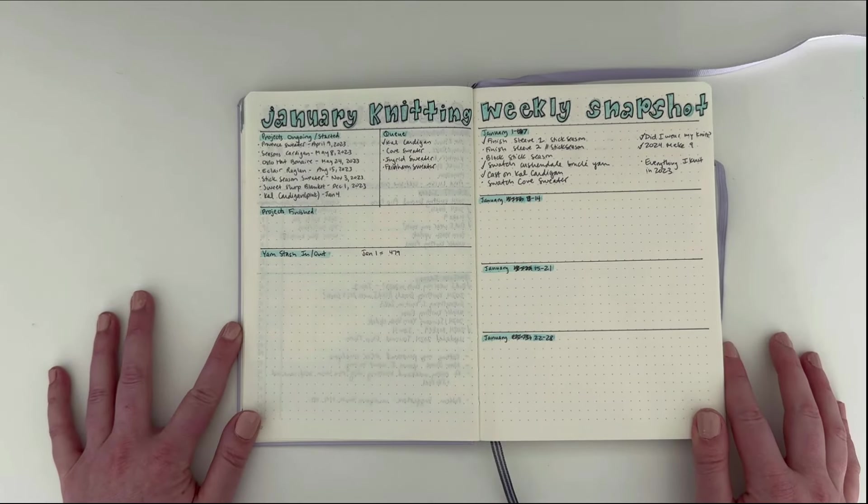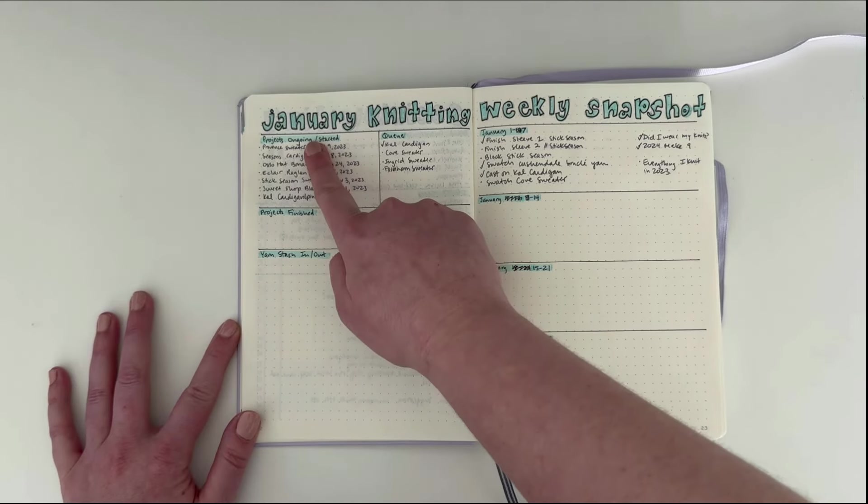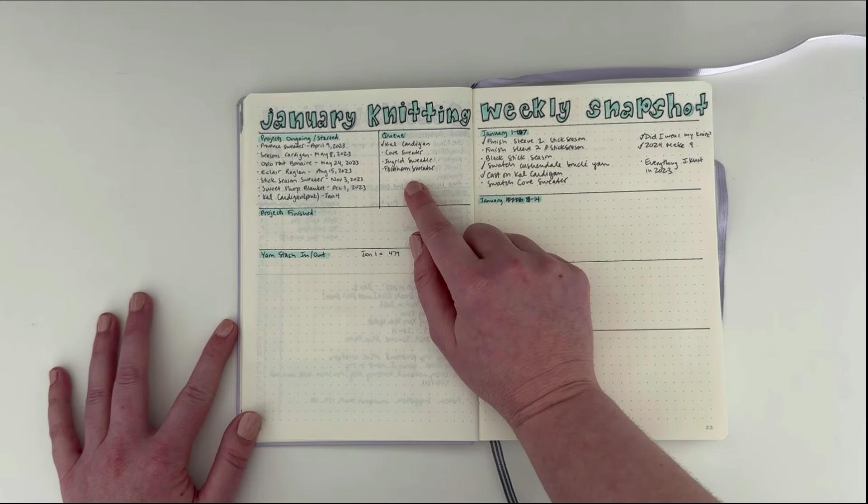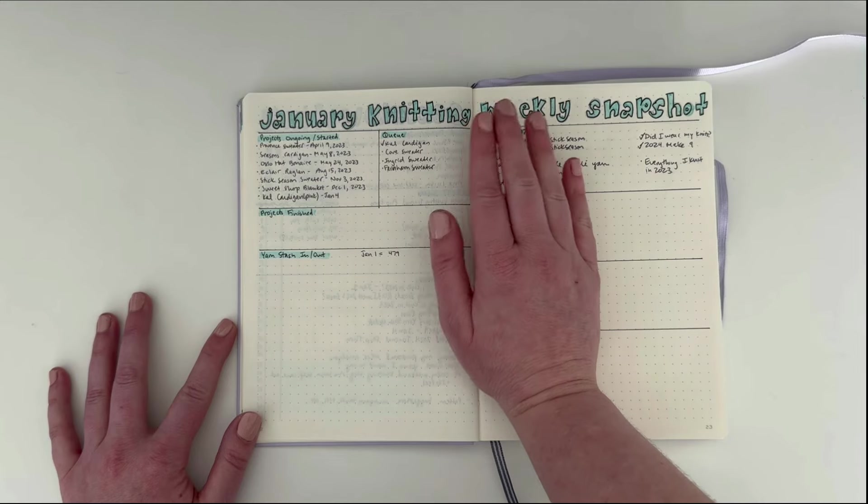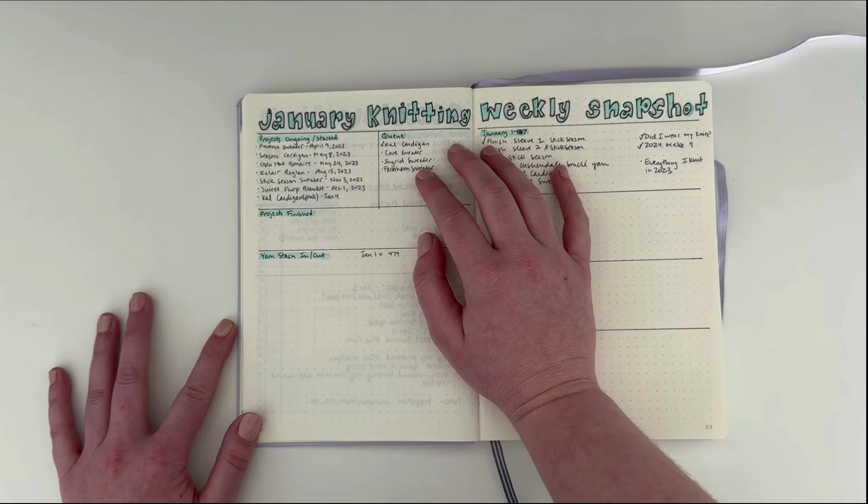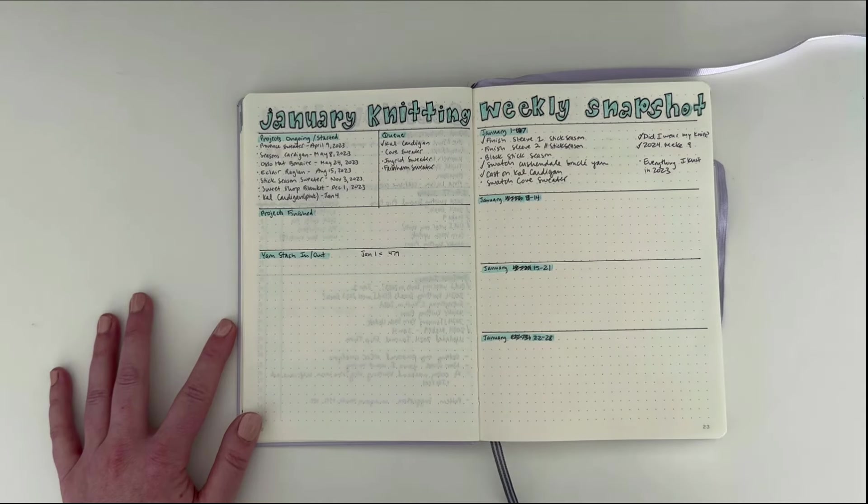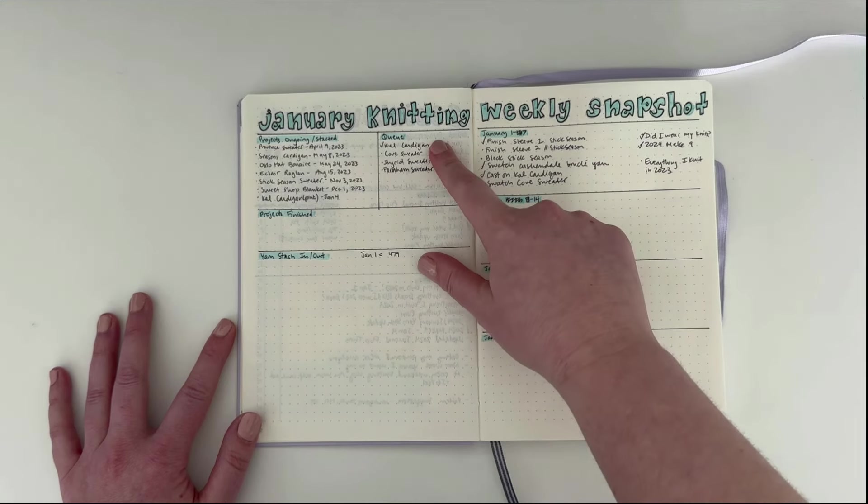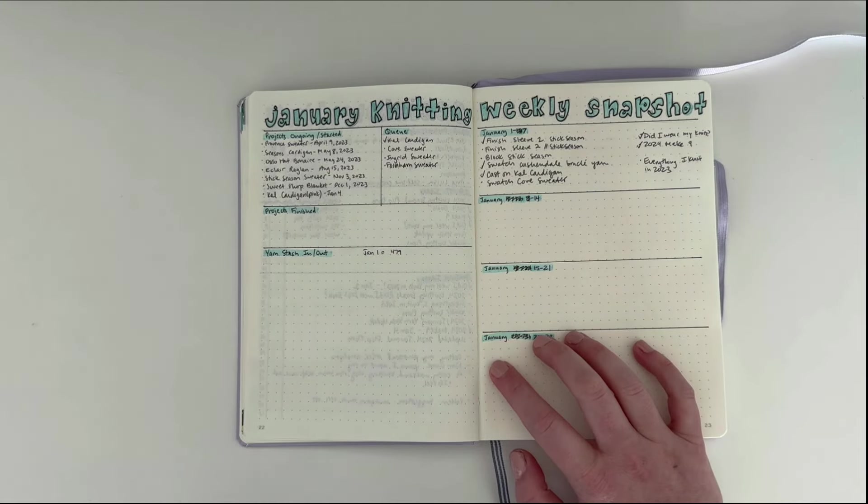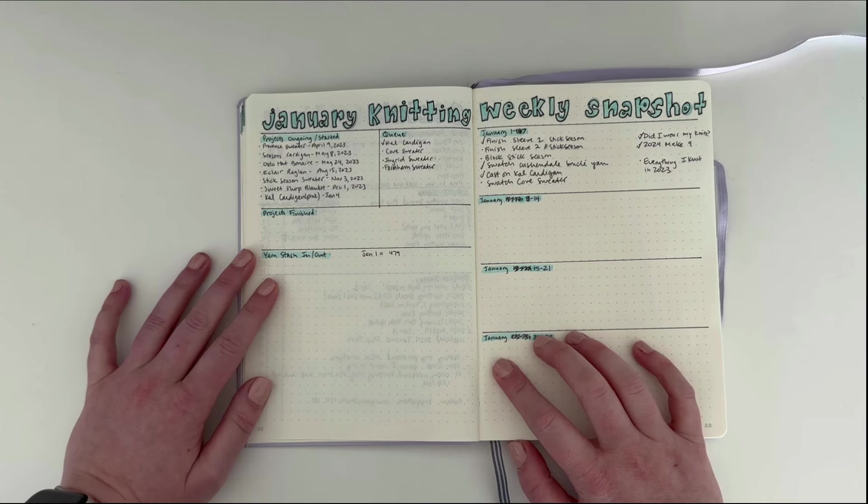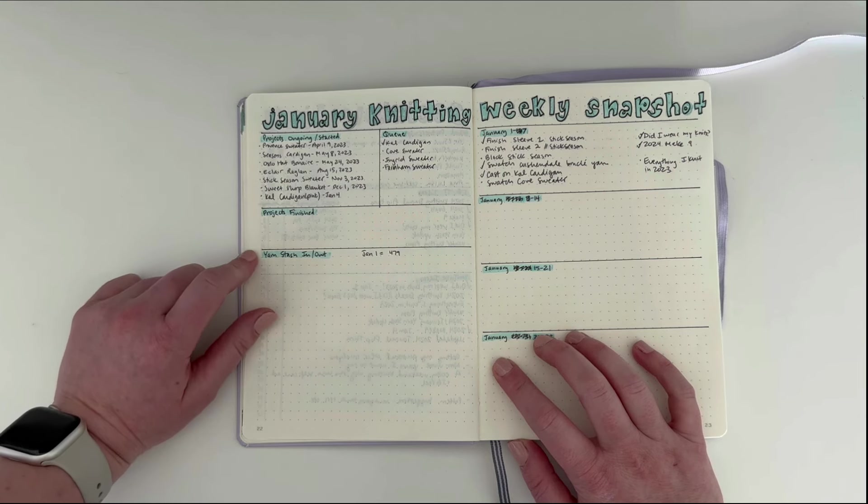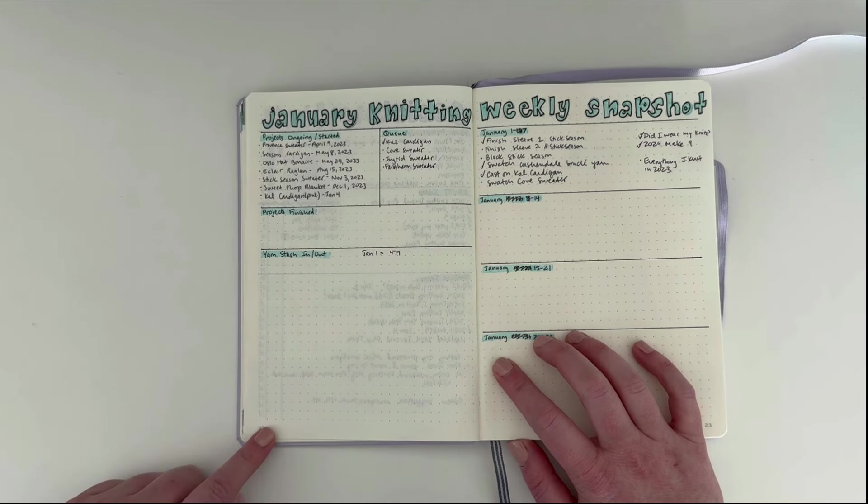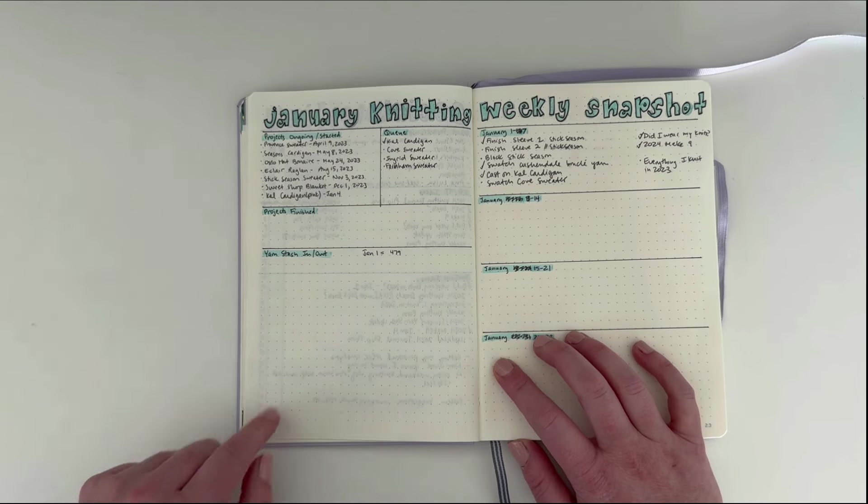Lastly, for my monthly spreads, I've got my January month at a glance where I have my projects ongoing and started. This queue, it sometimes fluctuates between a queue, things that I want to cast on, and patterns or yarns that I really can't get out of my head and I need to just write it down. Right now, it's a bunch of patterns from my make nine that I would really love to cast on, plus a cardigan that's not on my make nine. Then I have a section for projects finished. I really don't finish that many projects in a month, so that's why this space is pretty small. And then my yarn stash in and out tracker. I haven't bought any yarn yet this year, which is good, although I do think I have a delivery arriving later today.